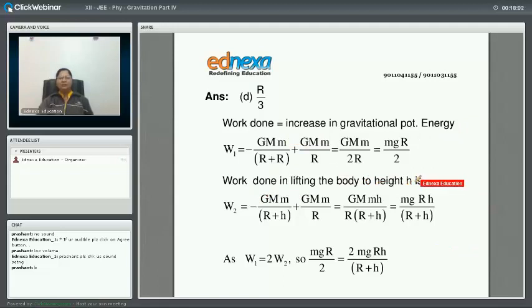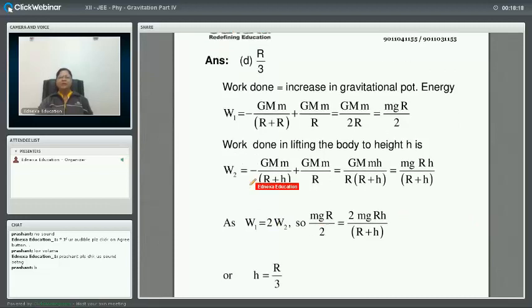Now, work done in lifting the body to height h is given by W2 equal to minus GMm upon (R plus h) plus GMm upon R, which gives you mgR into h upon (R plus h).